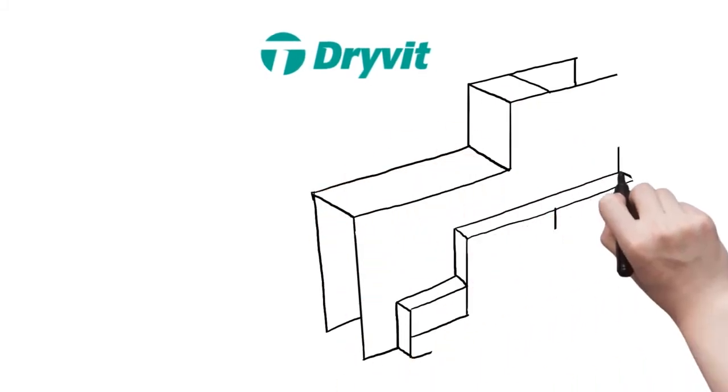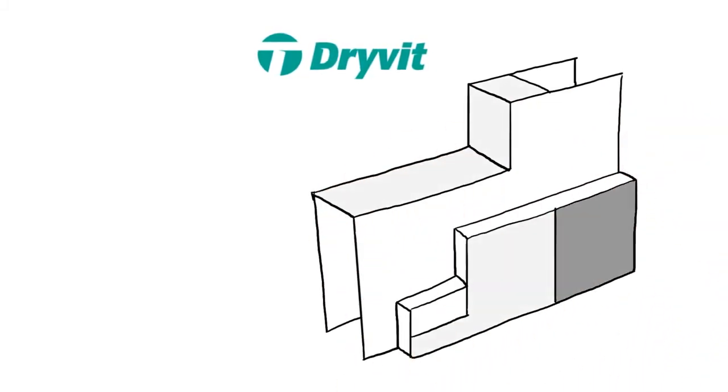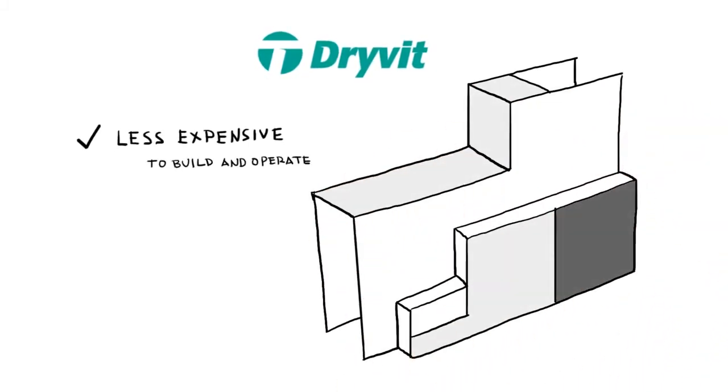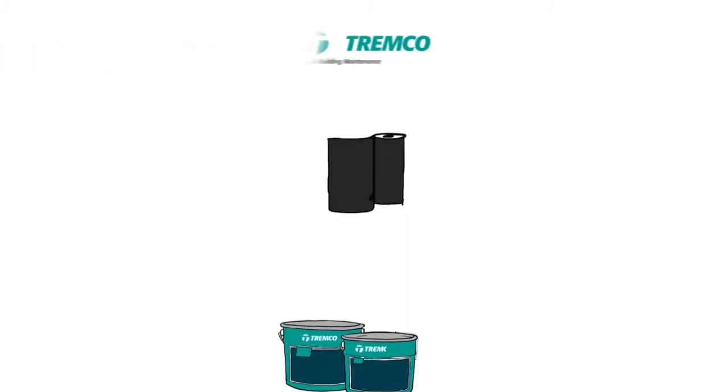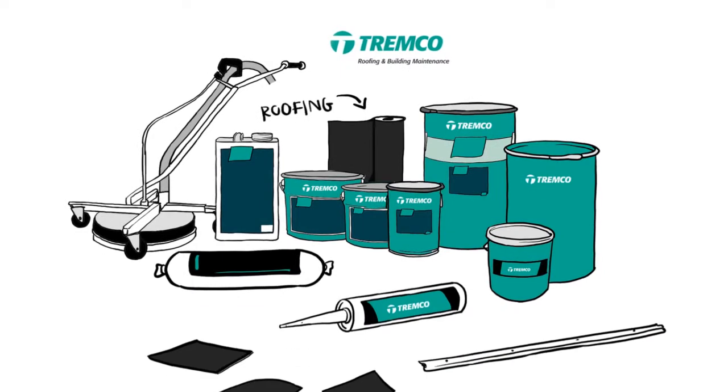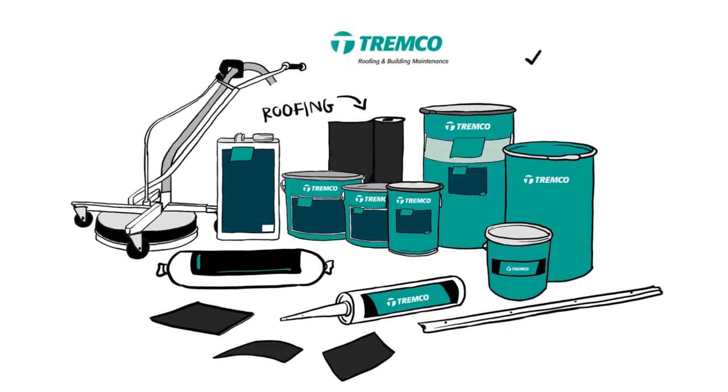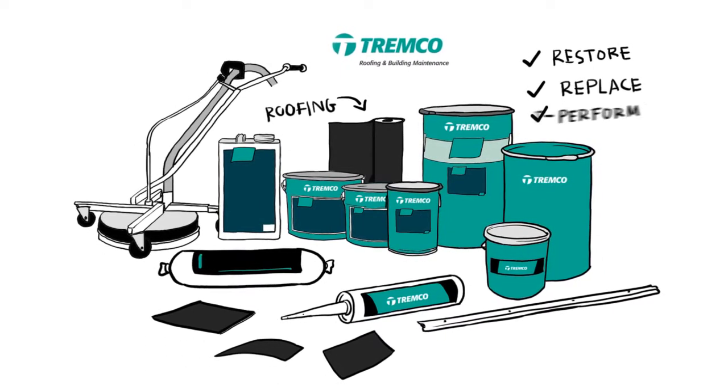Built-in durability and insulation properties result in structures that are less expensive to build and operate. And for the roof, Tremco Roofing and Building Maintenance offers industry-leading solutions that restore, replace and outperform.